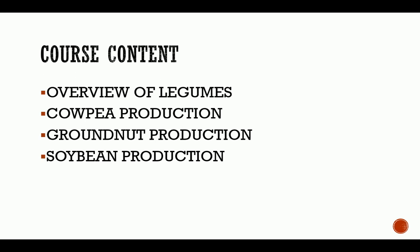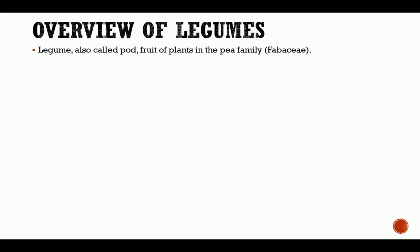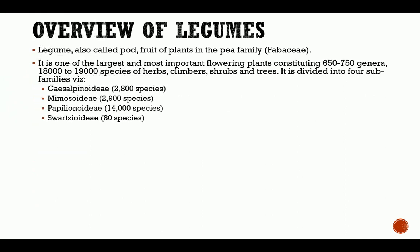In this section of arable crop production called the legumes lecture, what are legumes? Legumes are also called podded fruits. These are fruit plants of the pea family, Fabaceae. The legume is one of the largest and most important flowering plants, constituting about 650 to 750 genera and 18,000 to 19,000 species of herbs, climbers, shrubs, and trees. It is divided into four sub-families: Caesalpinioideae, which consists of about 2,800 species; Mimosoideae, which consists of about 2,900 species; Papilionoideae, which consists of about 14,000 species; and Swartzioideae, which consists of about 80 species.